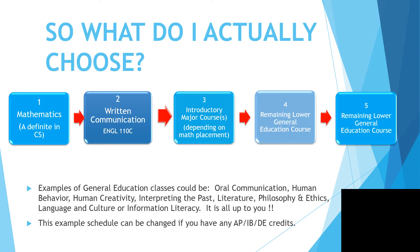So what can you actually choose? The most important class in computer science is math. Then you can choose an English class or written communication, a class within your major depending on your math placement, and then two lower gen ed classes. These gen ed classes can be oral communication, human behavior, human creativity, history, literature, philosophy, language, or information literacy. It's all up to you.